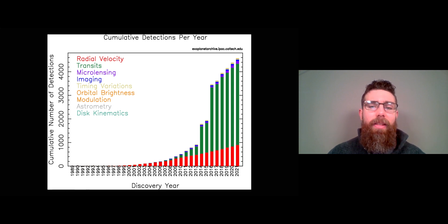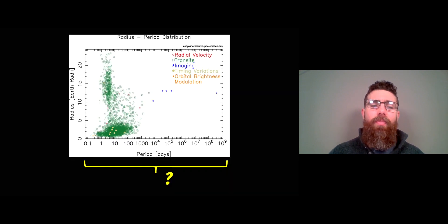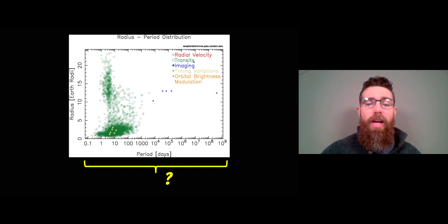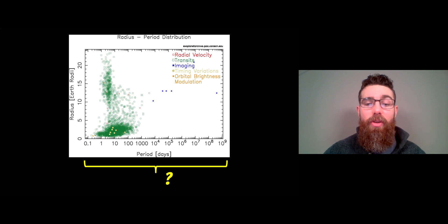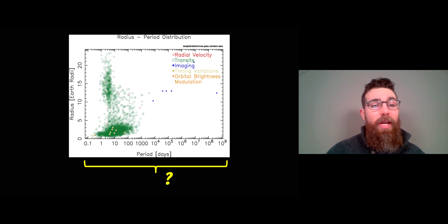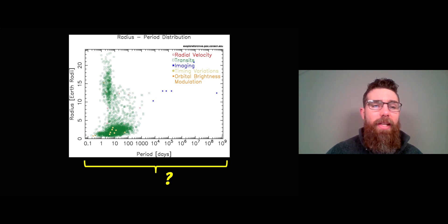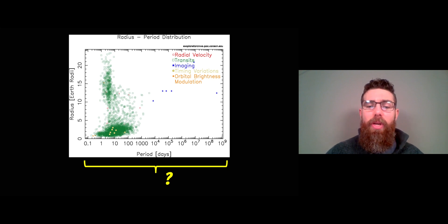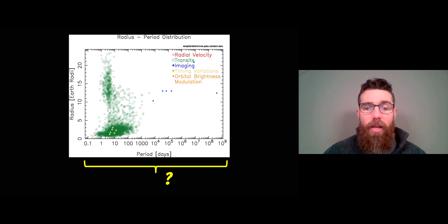So how do we actually get them? If you go on to the exoplanet archive you can get lots of information and plots of all of the exoplanets that have been discovered so far. Here is one — we've got the radius of the planet in Earth radii and we've also got the orbital period along the bottom.